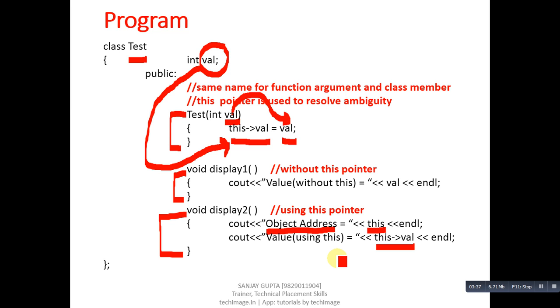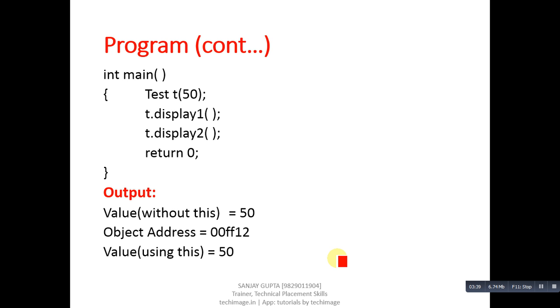Now main function. Inside main, object t is created. It is calling display1 and then display2. So every time when display1 and display2 functions are called, an object should be associated with them. So here t is used to call display1 and display2, so in both the functions, address of this t object will be passed automatically. You can see the output: this 50 is printed through display1 function, and these two outputs are displayed through display2 function. So display2 function is printing first address and then value of val variable.